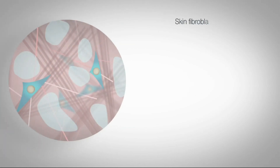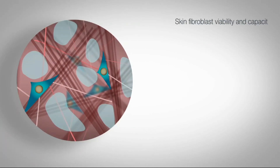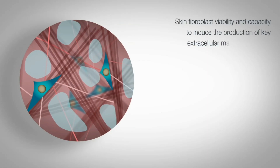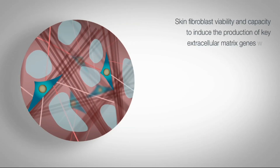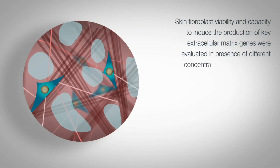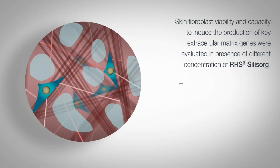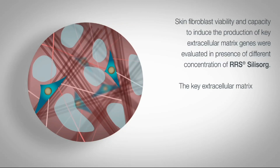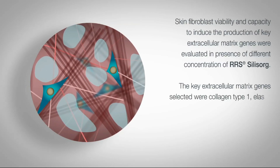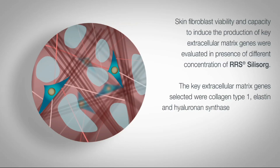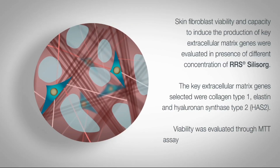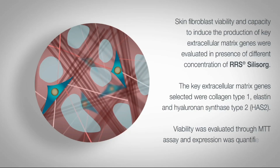Skin fibroblast viability and capacity to induce the production of key extracellular matrix genes were evaluated in the presence of different concentrations of Aresilisrox. The key extracellular matrix genes selected were collagen type 1, elastin, and hyaluronan synthase type 2. Viability was evaluated through a compound assay and expression was quantified by quantitative polymerase chain reaction.